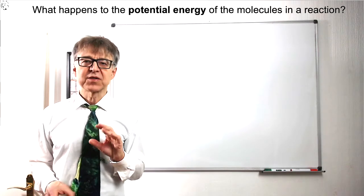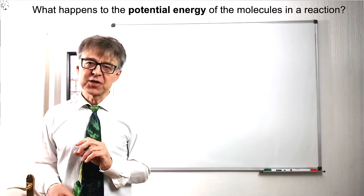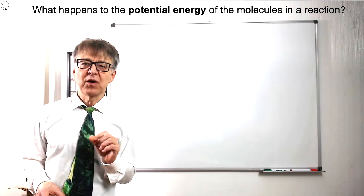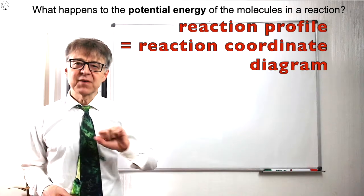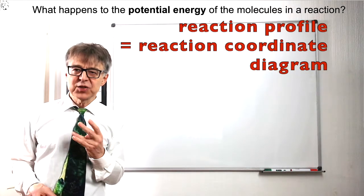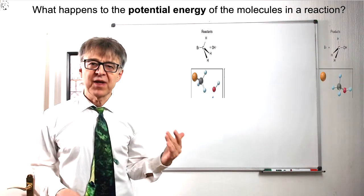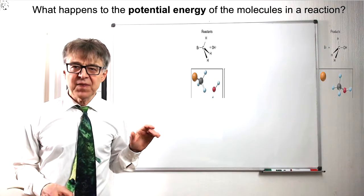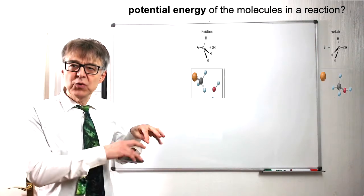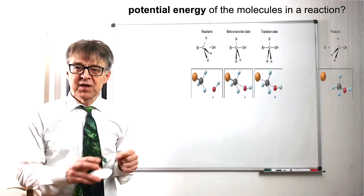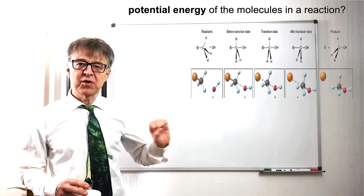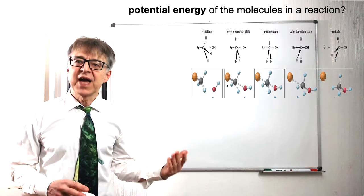What happens microscopically in a chemical reaction? This question is answered by the so-called reaction profile. Let's take the FN2 reaction of bromomethane with OH- ions as an example. During the reaction, the atoms of the reactants rearrange in space. This geometric rearrangement is described by the x-coordinate of the profile, the reaction coordinate.